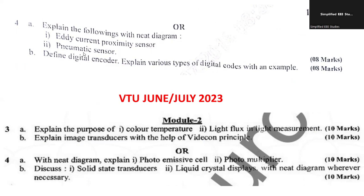Define digital encoder — what is an encoder, how does it work, and explain the various types of digital codes with the help of an example. That carries 4 plus 4 marks. For the latest paper June-July 2023: explain the purpose of color temperature and light flux in light measurement; explain the image transducer using the Vidicon principle. Note: this concept was not in the 2015 syllabus but has been added in the latest syllabus.